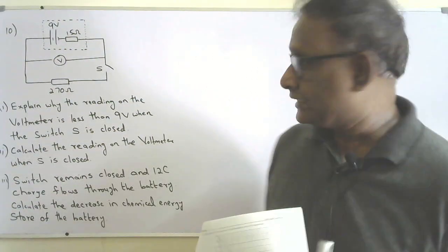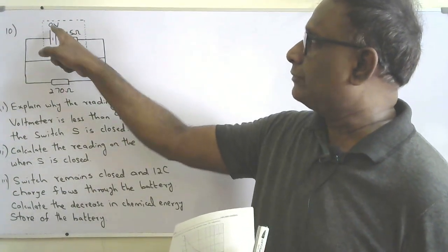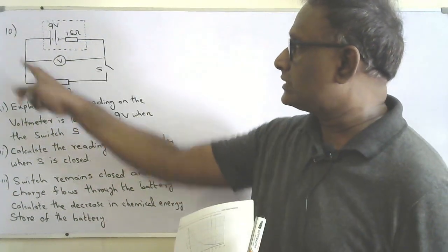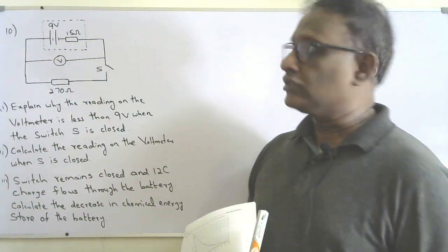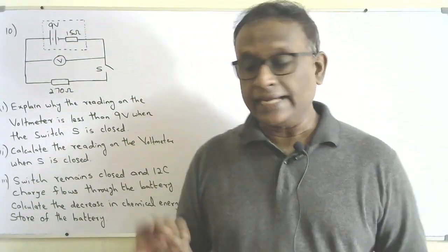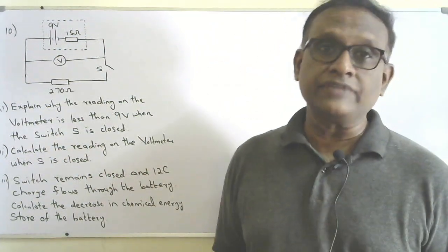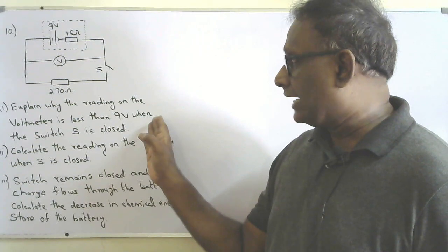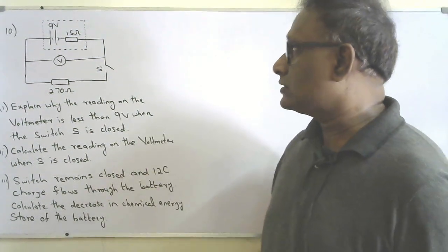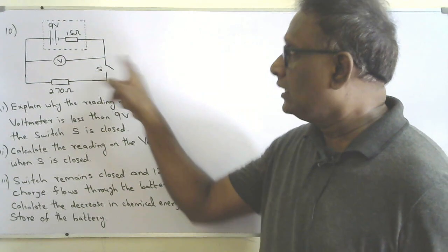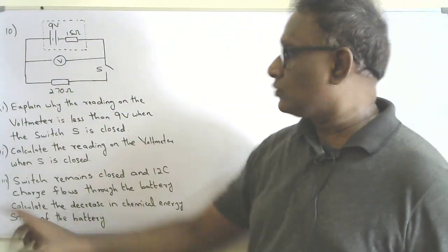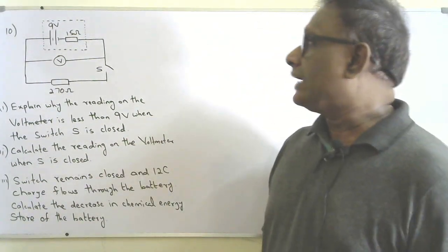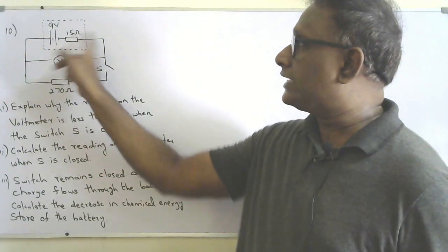This is the 10th question. A real cell has EMF 9 volt and internal resistance 15 ohms, connected to a circuit. The voltmeter is ideal — its resistance is very large and no current flows through it. Explain why the reading on the voltmeter is less than 9 volt when the switch is closed. When closed, there will be current flowing through the 270 ohm resistor.